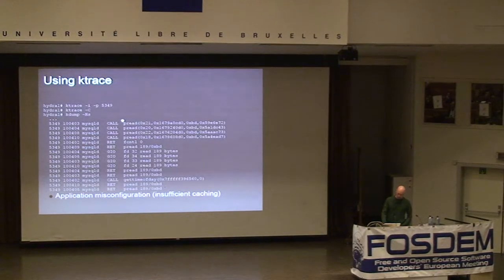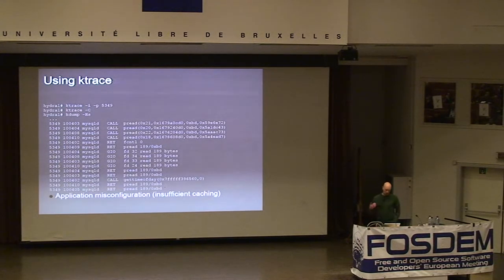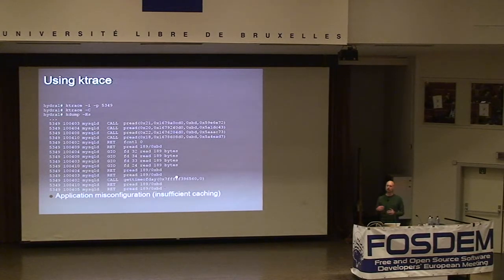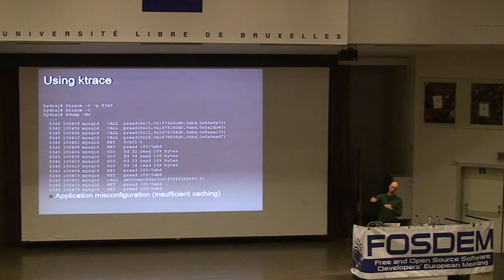Running ktrace on the MySQL process that was generating all this I/O, we see it's repeatedly doing pread syscalls, reading a few bytes out of the kernel. This points to a misconfiguration: the caching parameters weren't set up properly, so every time it wanted to read from the database it had to read from the filesystem rather than caching in userland. Each read crosses into the kernel and is satisfied from kernel cache — which is too far from the application to be high performance.